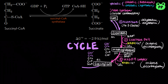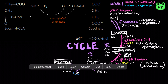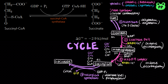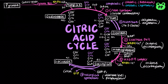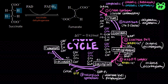Next, the thioester bond in succinyl-CoA is cleaved to form succinate and free CoA. The energy released from the breakage of this bond is coupled to the substrate-level phosphorylation of GDP to GTP, which is carried out by the enzyme succinyl-CoA synthetase, named for the reverse reaction. In the sixth step of the citric acid cycle, succinate is oxidized to fumarate by succinate dehydrogenase, which is coupled to the reduction of FAD to FADH2.